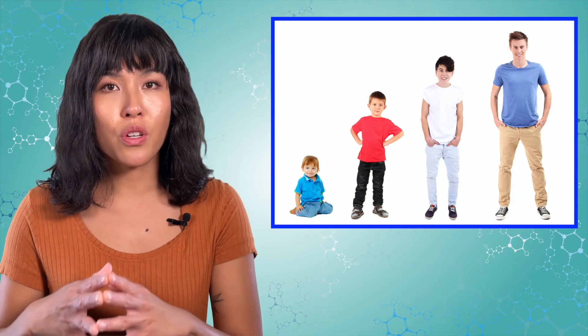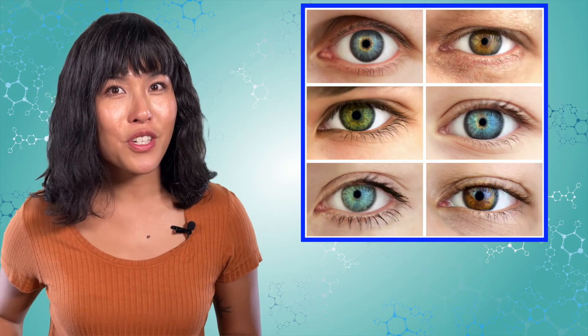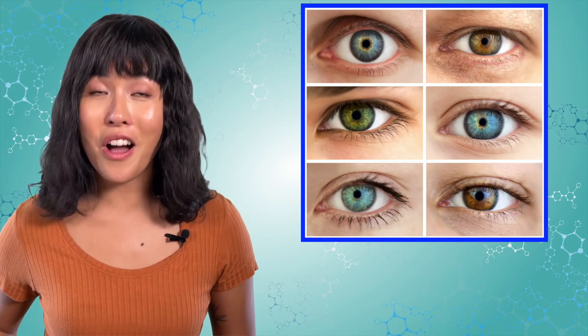You have approximately 25,000 total genes in your body. Most of these genes contain instructions for things you will never even be aware of — they tell your body how to digest your food, make blood cells, control your growth and development, and more. Sometimes many genes work together to produce a single trait. That's why there are so many possible eye colors: 16 different genes control your eye color, which makes a lot of combinations.